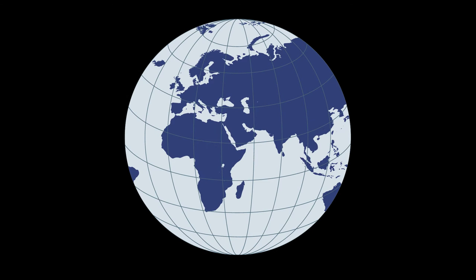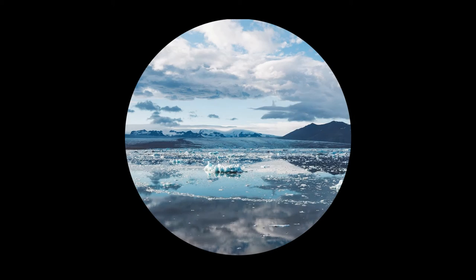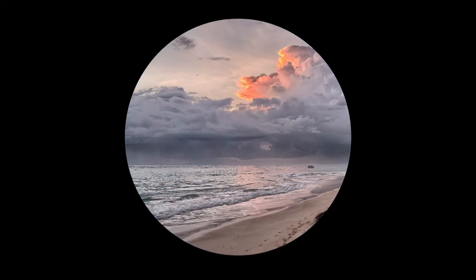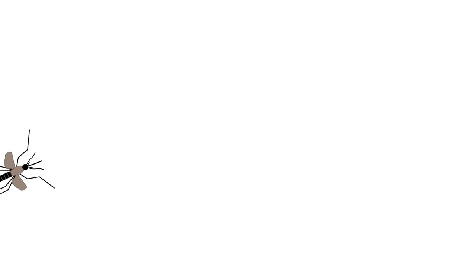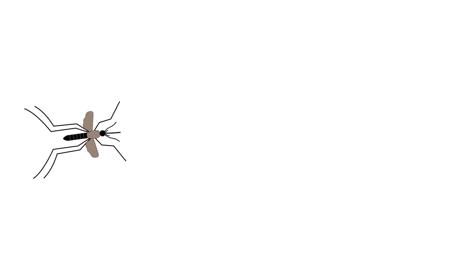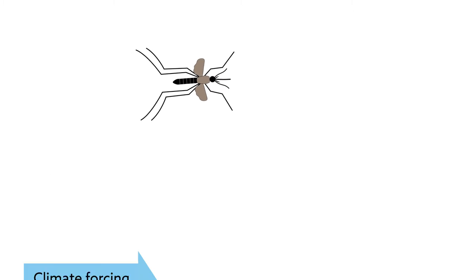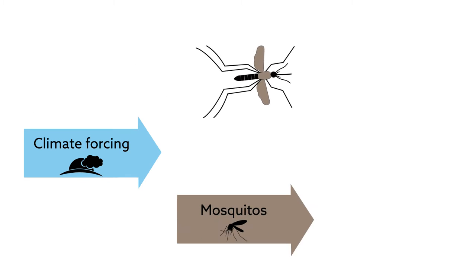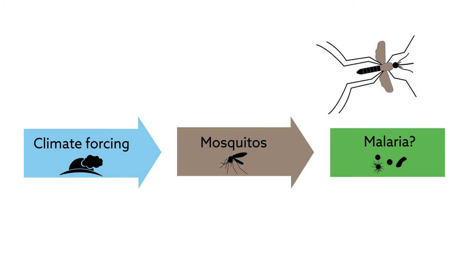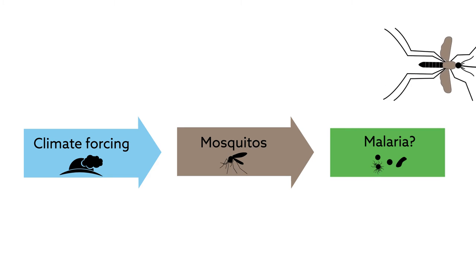Many of the predicted impacts of climate change on the planet are bad, if not catastrophic. Melting glaciers. Rising sea levels. More extreme weather. But what about the effect on diseases spread by mosquitoes? Will malaria become more common, too? Scientific efforts to find out have thus far been oversimplified, and the results mixed.